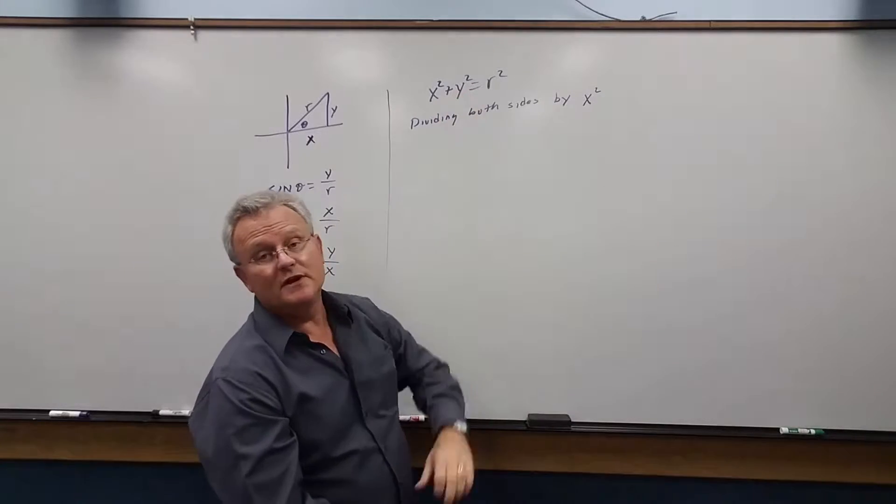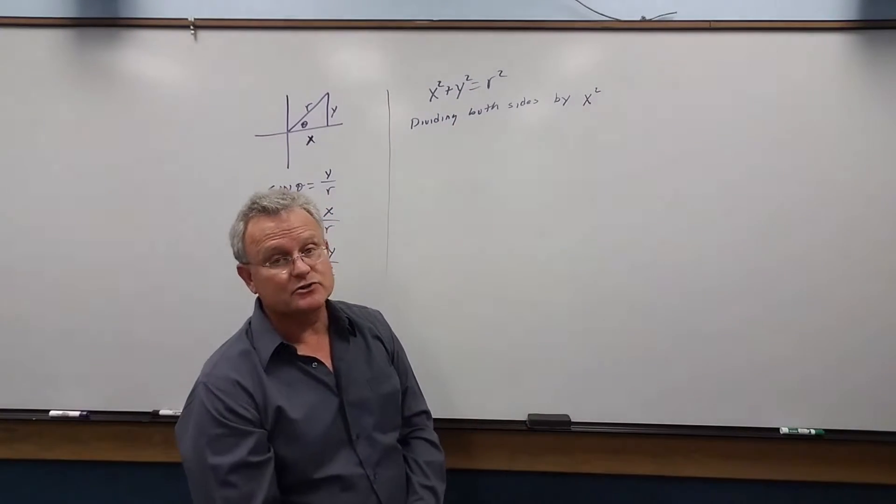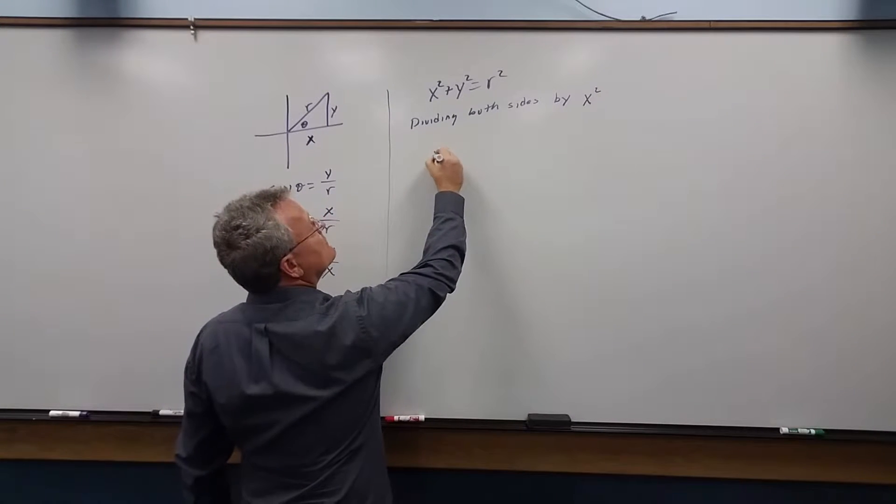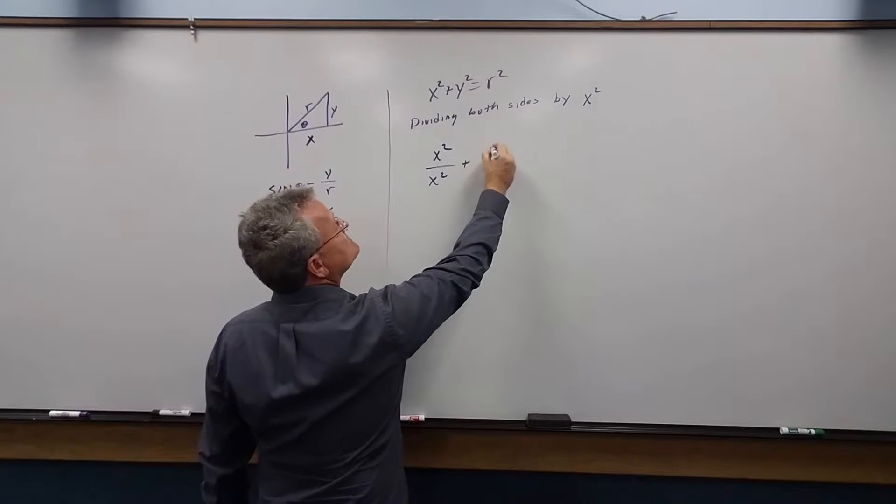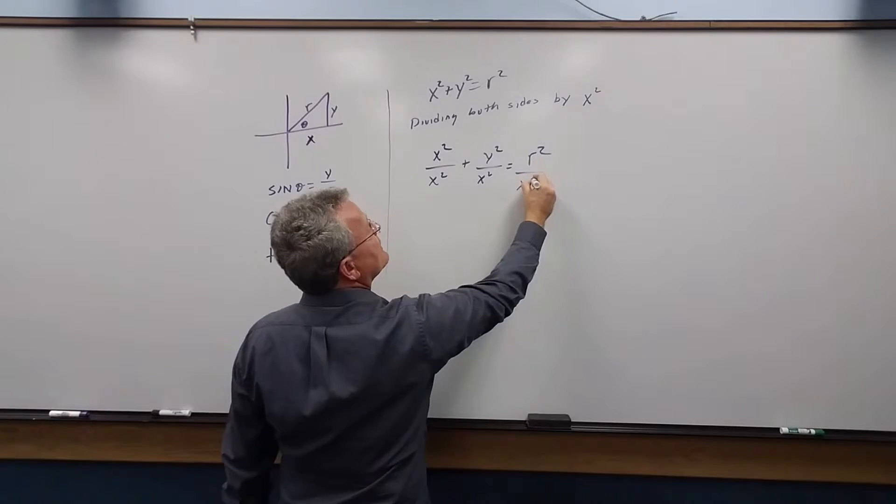Now in an earlier video we divided both sides by r squared. Well, let's divide by x squared in this case. So dividing both sides by x squared, we get x squared over x squared plus y squared over x squared equals r squared over x squared.